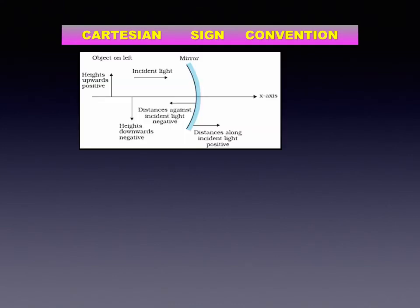Now we shall see the Cartesian sign convention. According to this convention, the pole of the mirror is taken as the origin, and the principal axis is taken as the x-axis of the frame of reference. The sign conventions are: first, the object is always kept on the left of the mirror, and all distances parallel to the principal axis are measured from the pole. Second, all distances measured towards the right of the pole are positive, while those towards the left are negative. Third, distances measured vertically upward from the principal axis are positive, and those measured vertically downward are negative. The focal length of a concave mirror is negative, while that of a convex mirror is positive.